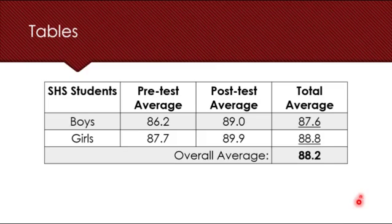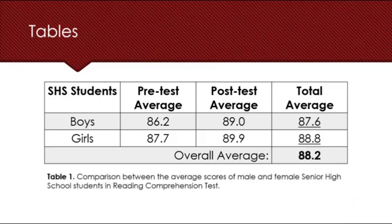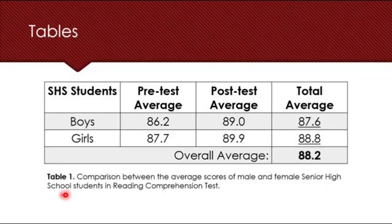Don't forget that when it comes to visual representation, it needs to have a title. For example, this one is Table 1: Comparison between the average scores of male and female senior high school students in reading comprehension test. Your title should describe what is in the table — try to be as descriptive as possible. The title only describes the contents; it does not yet explain them.